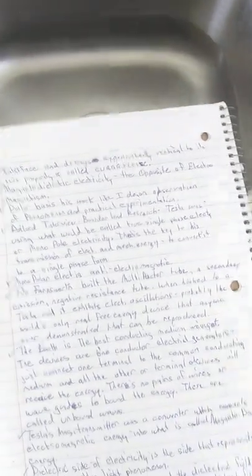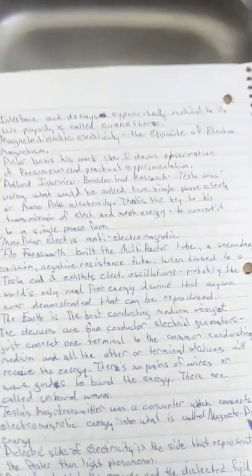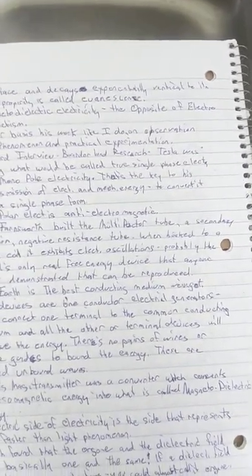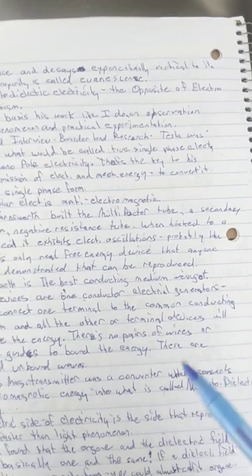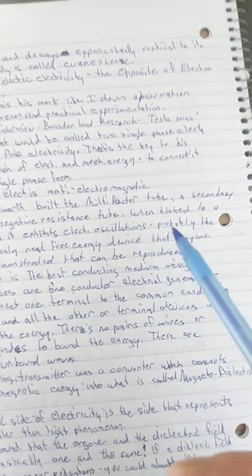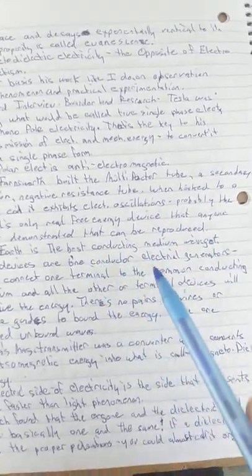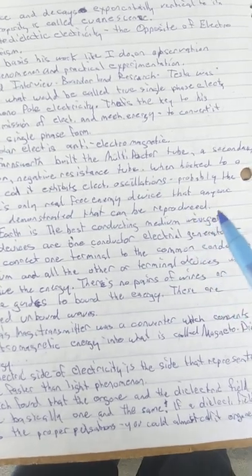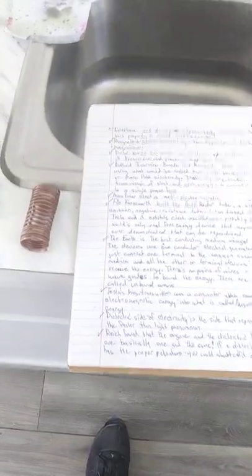Monopolar electricity is anti-electromagnetism. He says Philo Farnsworth built a multi-packed tube, a secondary emission negative resistance tube. When hooked to a Tesla coil, it exhibits electrical oscillations — probably the world's only real free energy device that anyone ever demonstrated that can be reproduced. It's producing those cosmic oscillations, just like the wheel is doing. It's doing that pulse — it's pulsing the ether.